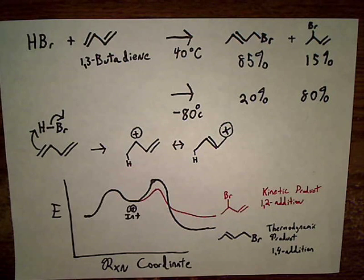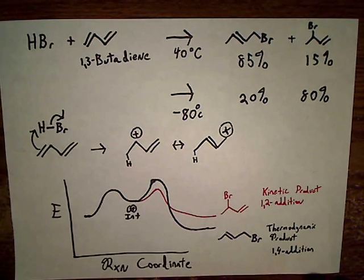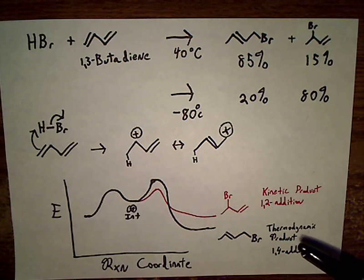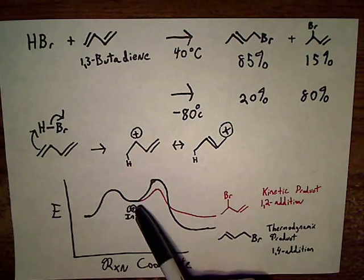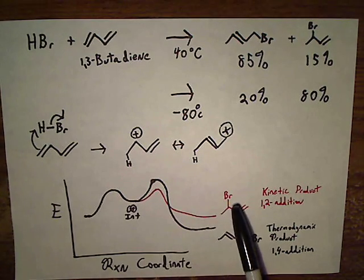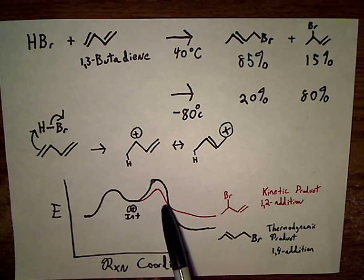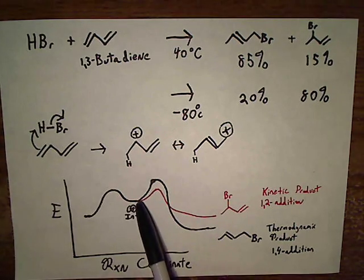So pretty much what happens is this whole reaction is reversible. So at really high temperatures, you're going to end up with a majority of the thermodynamic product. Because even though you're going to end up initially with a lot of the kinetic product, you're going to have enough energy to go back to reform the carbocation.